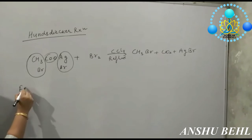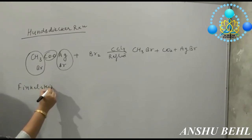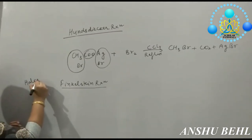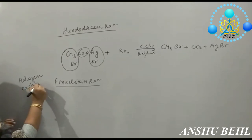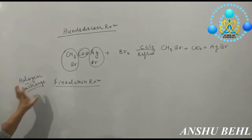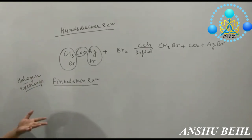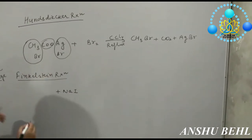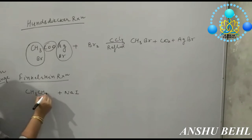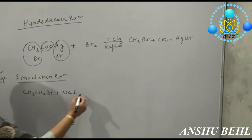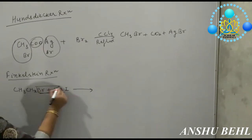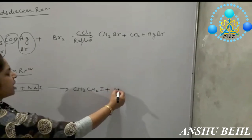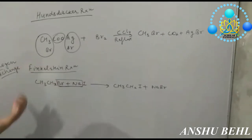Then you have the Finkelstein reaction, in which you can do halogen exchange. If you are having any halogen attached with an alkyl group and you want to add iodine, you take sodium iodide. The iodine will replace the existing halogen. For example, ethyl bromide reacting with NaI will form NaBr and iodine takes its place. This reaction is termed as the halogen exchange reaction.